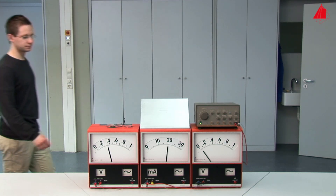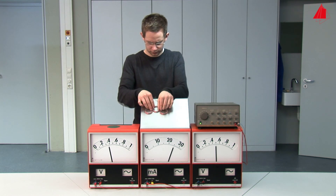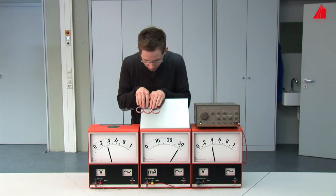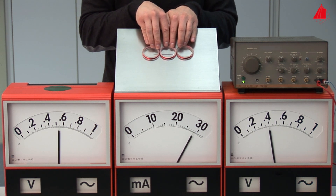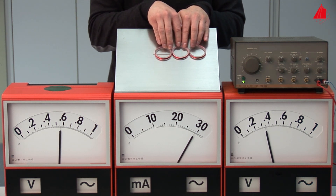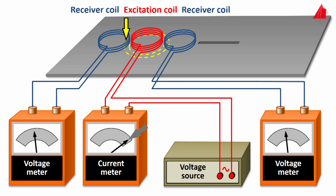Eddy current testing with surface probes can also be refined by using not just one coil but three. The middle coil is the excitation coil; the two outer ones are the receiver coils. When all three coils are moved over the sheet surface, the pointer of the right voltmeter deflects first, then the pointer of the left voltmeter. In an intact area of the sheet where the eddy current flows freely, the current consumption of the excitation coil is high. Because the eddy current path is slightly larger in diameter than the excitation coil, the magnetic field of the eddy current partially flows through the left receiver coil, inducing a small voltage in it, and likewise a small voltage in the right receiver coil.